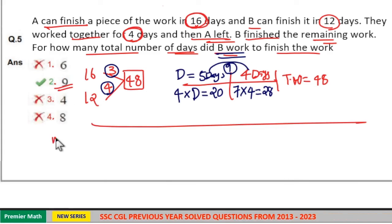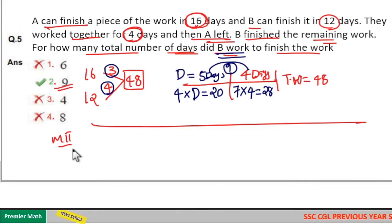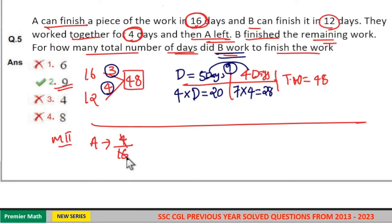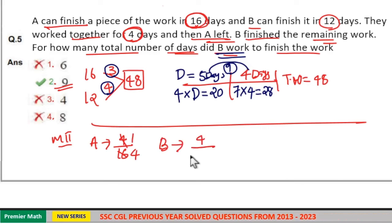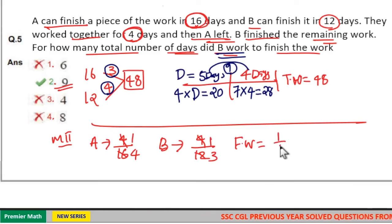Here you can do this question in a different method as well. A worked for 4 days and he can finish a work in 16 days. So 4 by 16 means 1 by 4 work he finished. Now B worked for 4 days and he can finish a work in 12 days. So 4 by 12 means 1 by 3 work he finished. So total finished work equals 1 by 4 plus 1 by 3 that is 7 by 12 work.